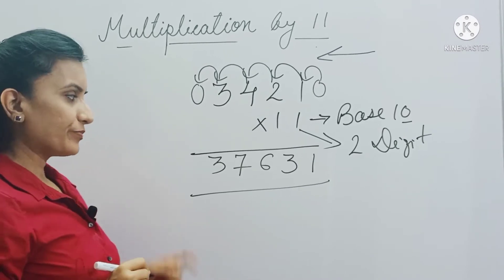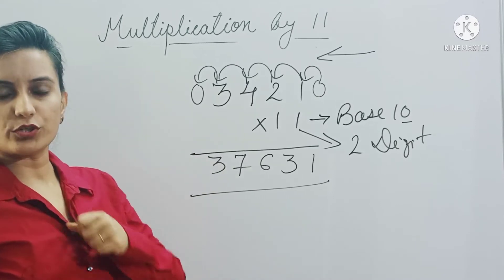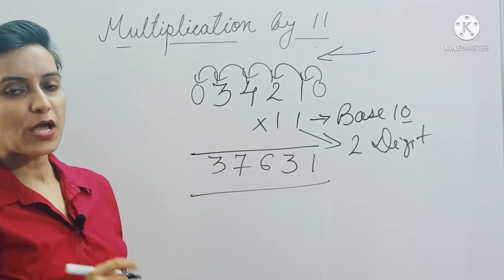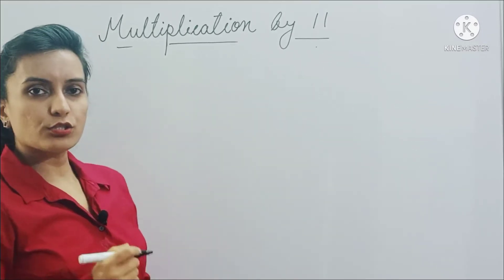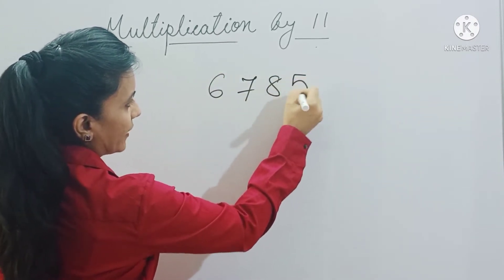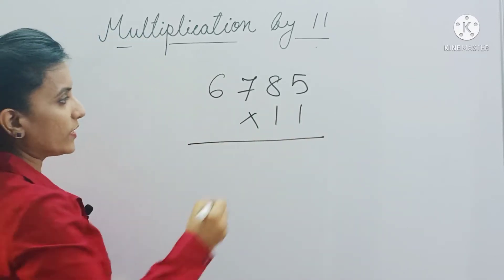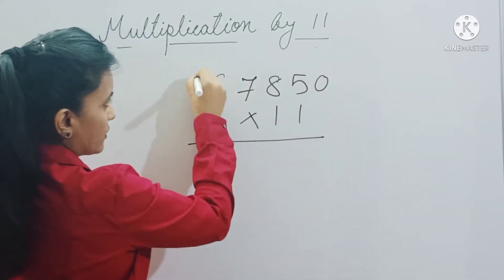Now in case if you get a carry forward, then what we do? Let's understand that by taking one more example. So let's take 6785 multiplied by 11. Now place one zero on both the ends of this number.